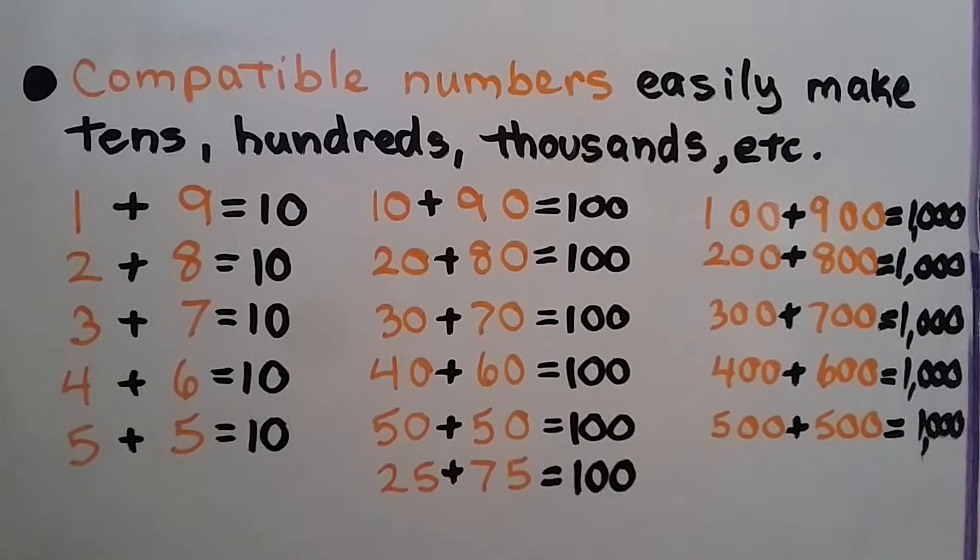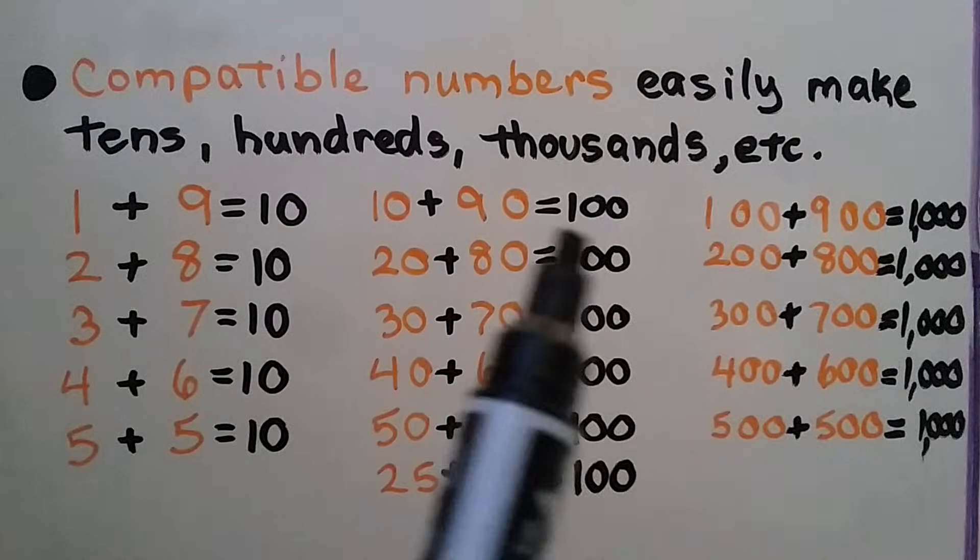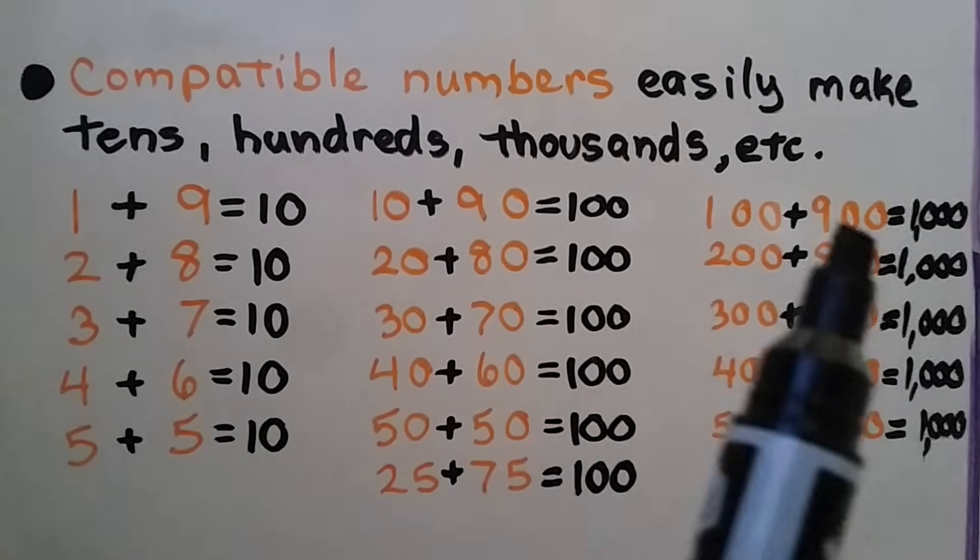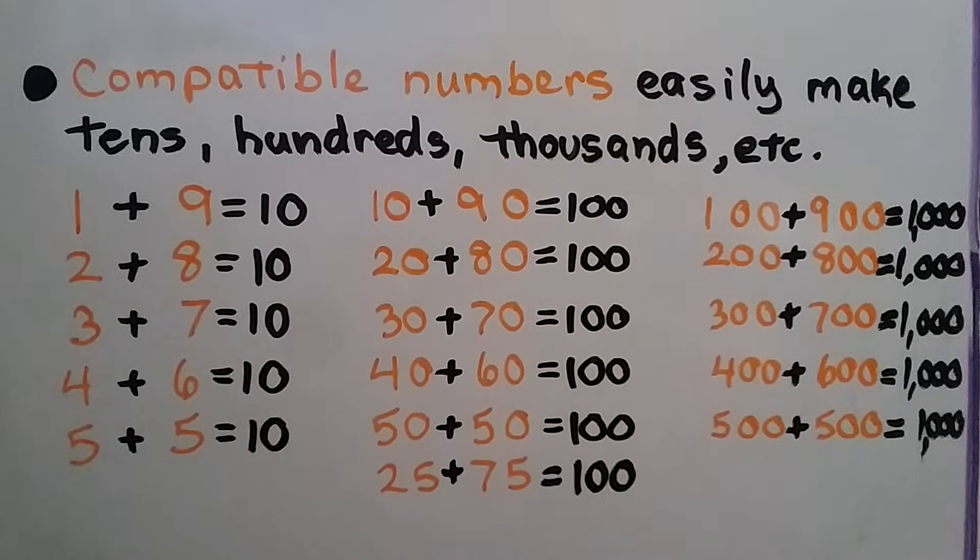Compatible numbers easily make tens, hundreds, thousands, and so on. So if we do 1 plus 9 equals 10, 10 plus 90 equals 100, 100 plus 900 equals 1000. Those are easy to do in your head and do mental math. So these would be compatible numbers, including counting, adding a 25 and a 75 to get 100.